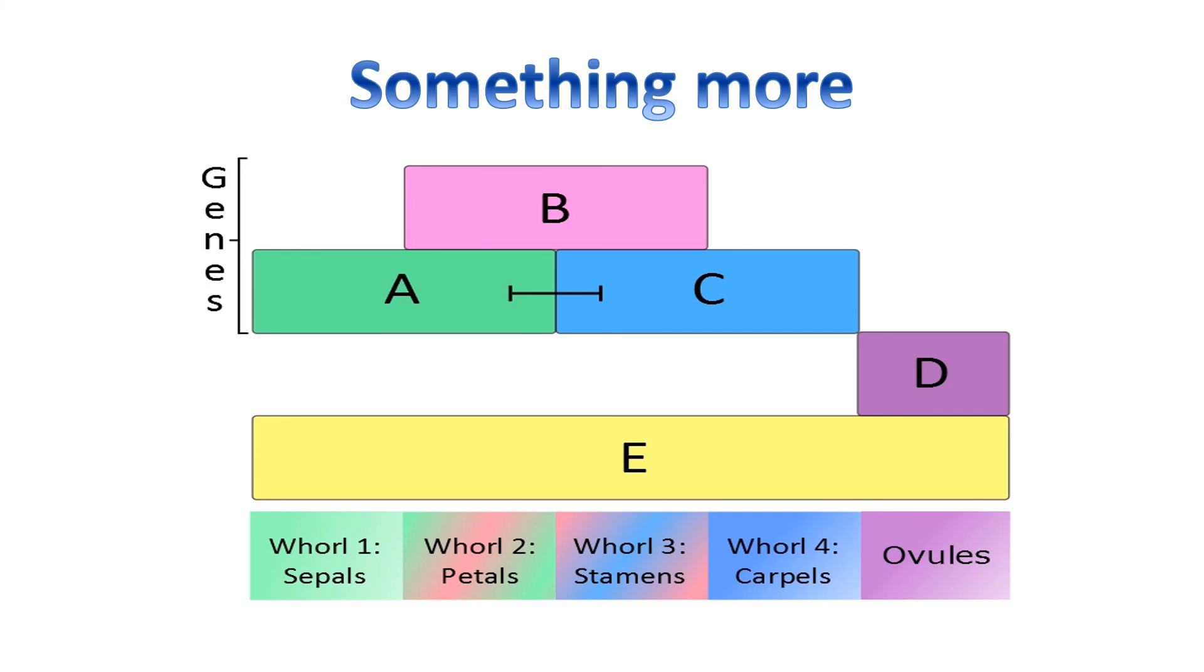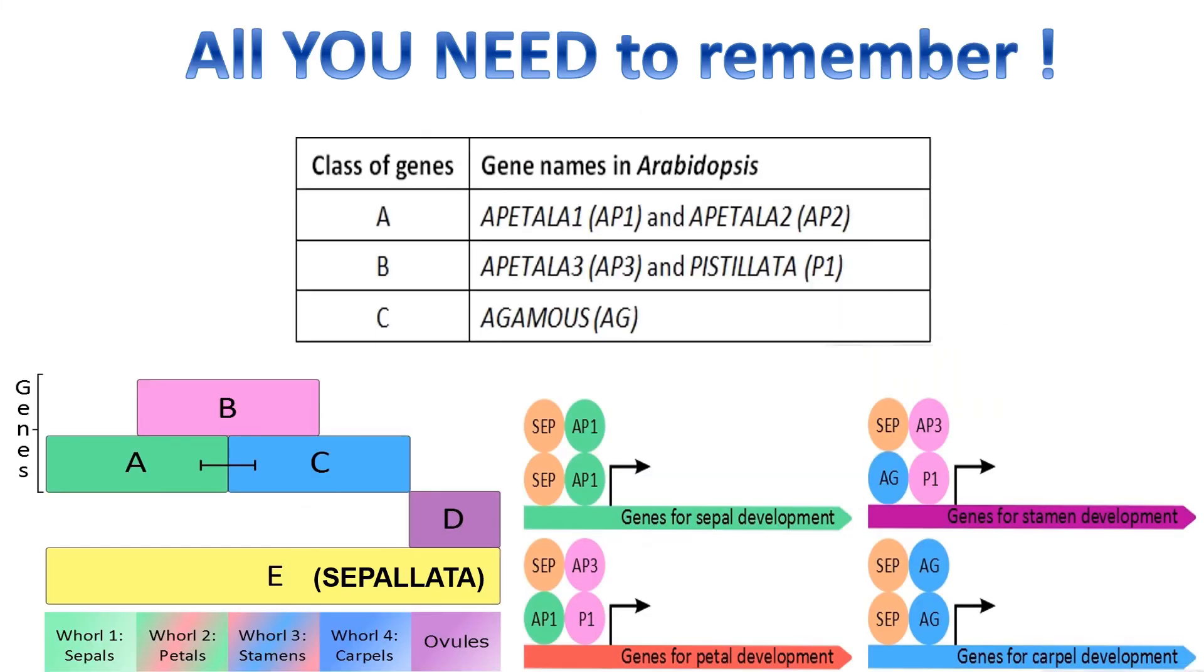Now this is all you need to remember for the ABC model. If I ask you the genes responsible for sepal formation, you must mention the class A genes, that is APETALA1 and APETALA2, along with the E genes, that is SEPALLATA.